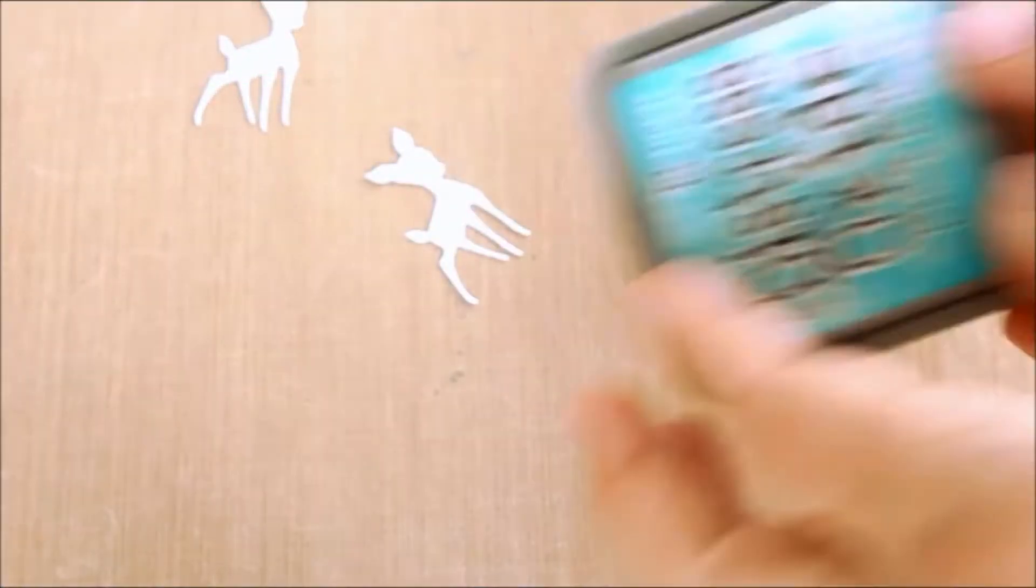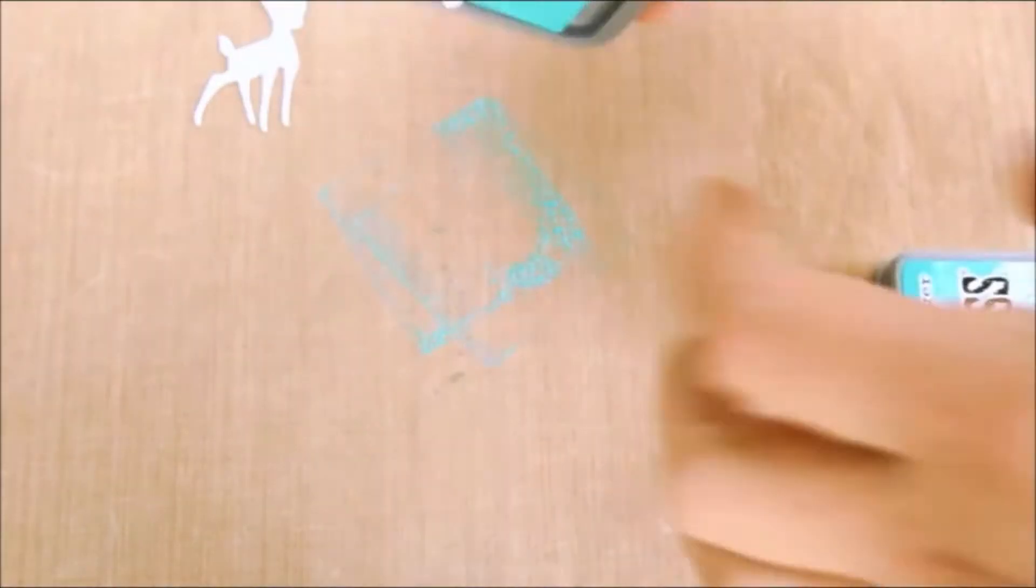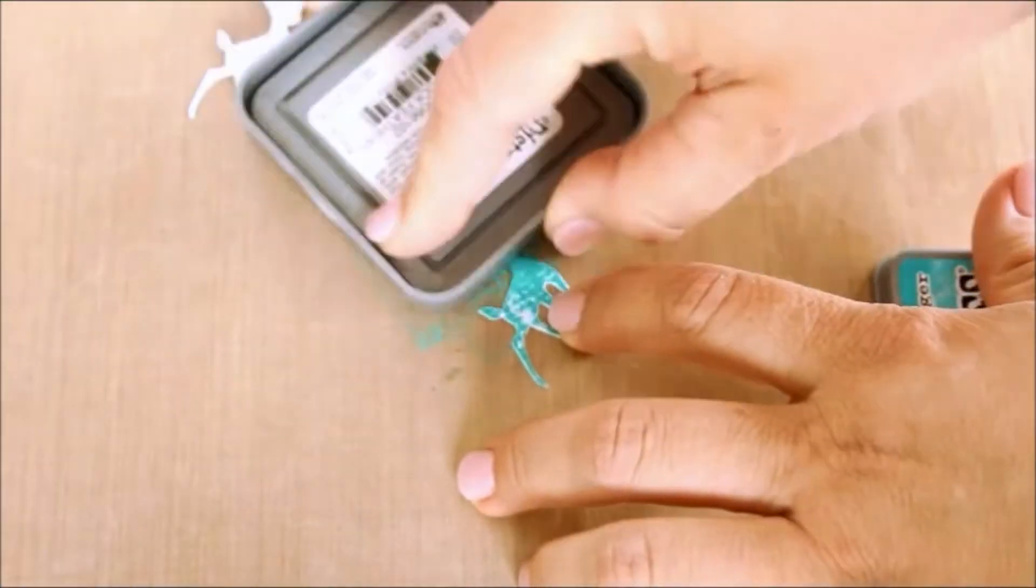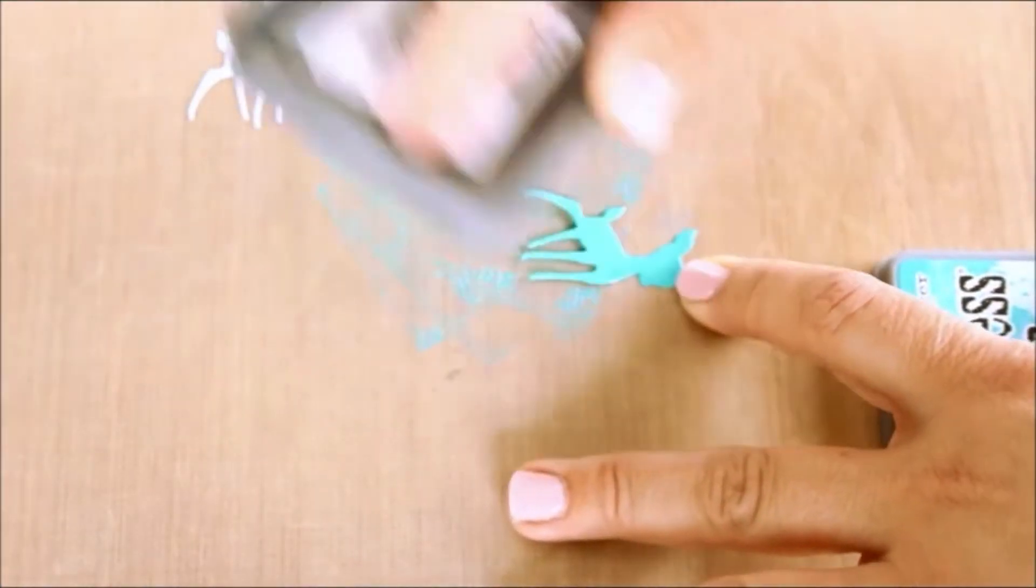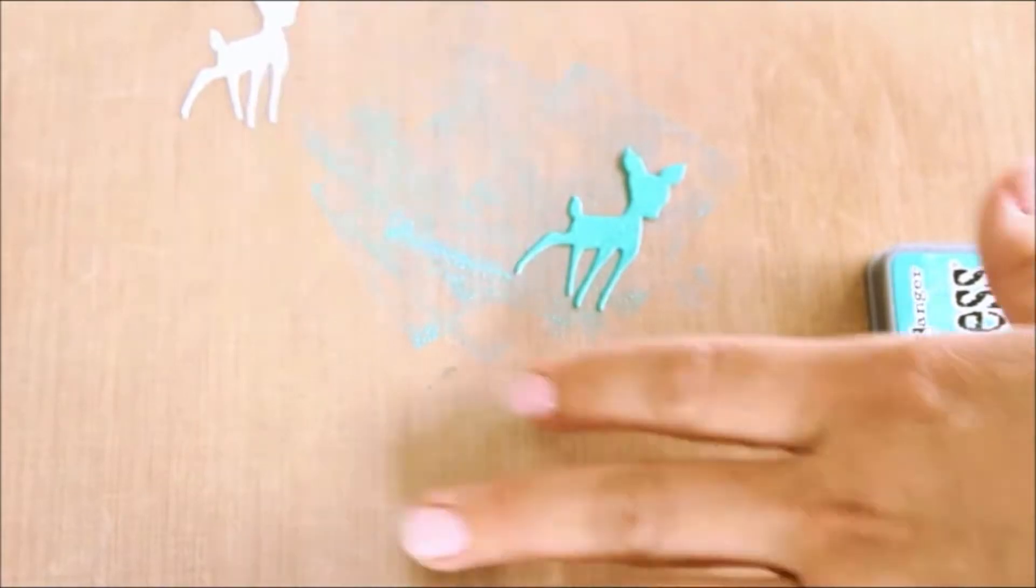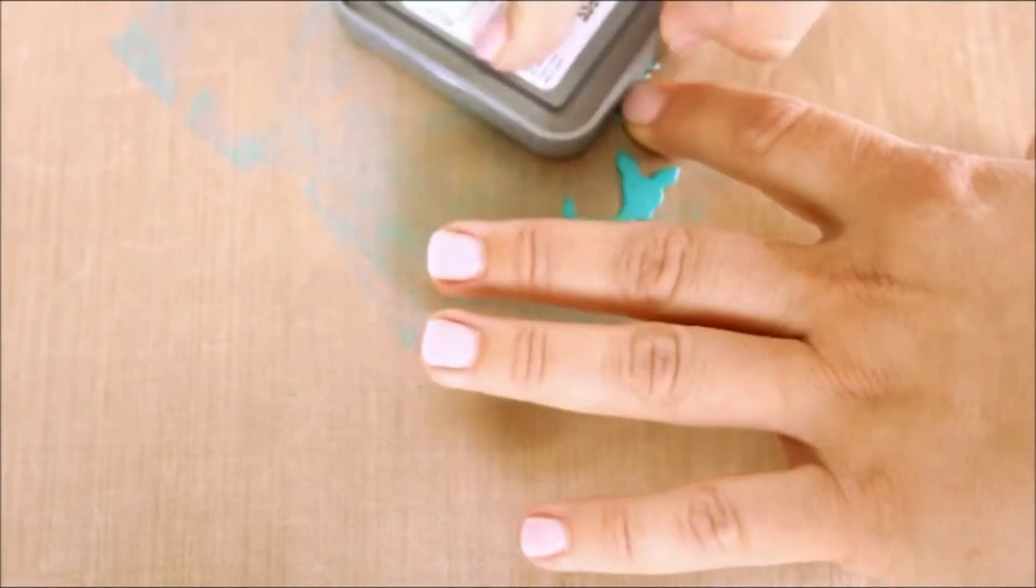Now I cut a couple of shapes of white card using the Cute Fawn die. And I colored these with Peacock Feathers Distress Oxide ink over my craft sheet. I was wondering why my fingers were blue.